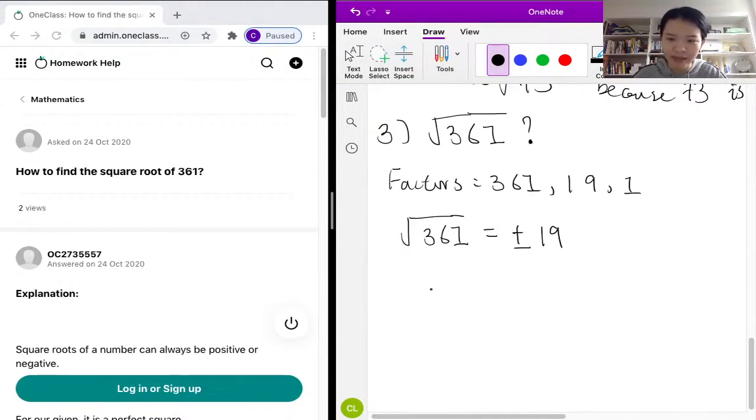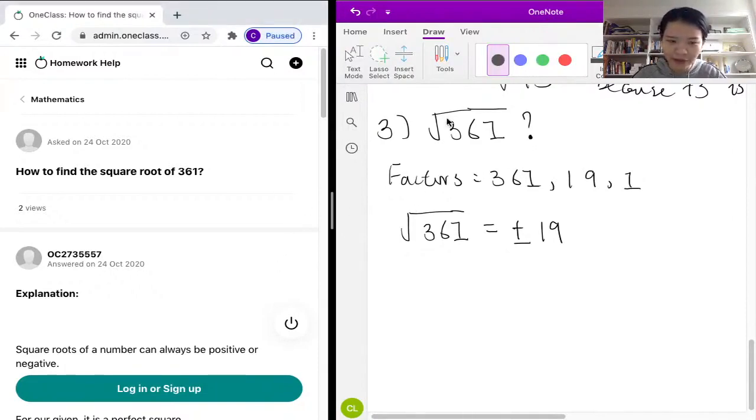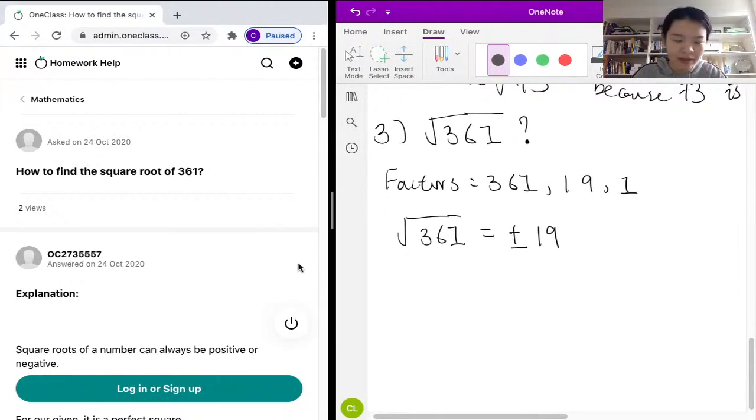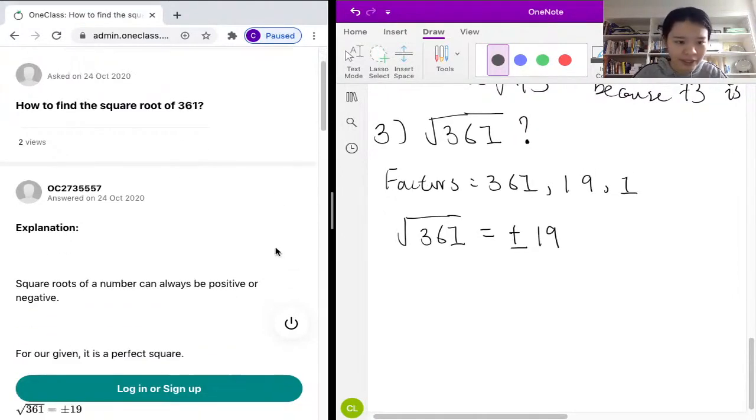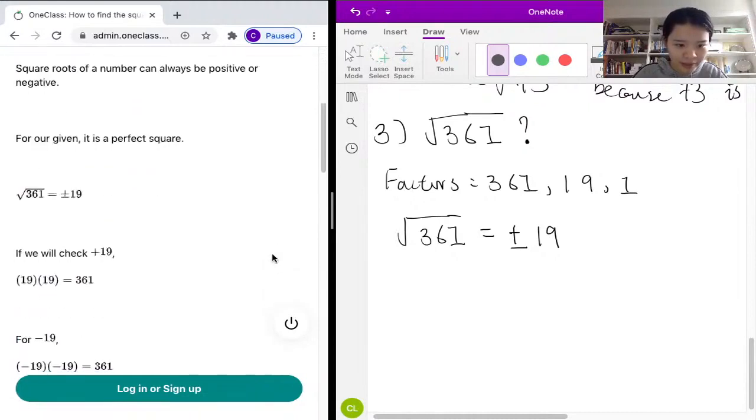Or you can use a calculator which is much easier. So yeah, this is how you know the square root of 361 is just 19. Now let's look at our sample solution here. Yes, it's just 19, perfect.